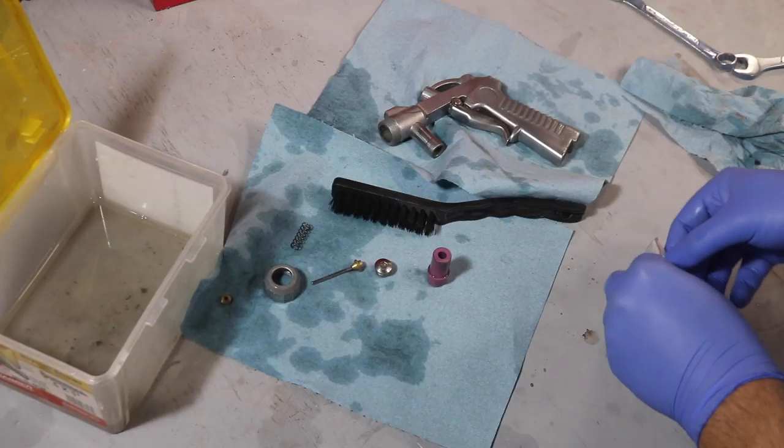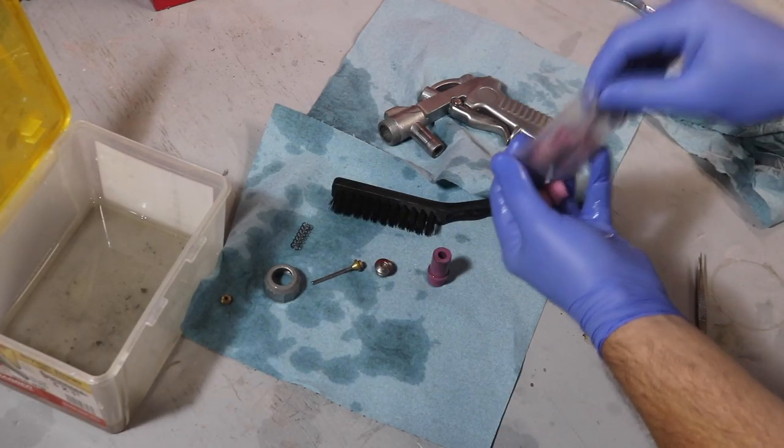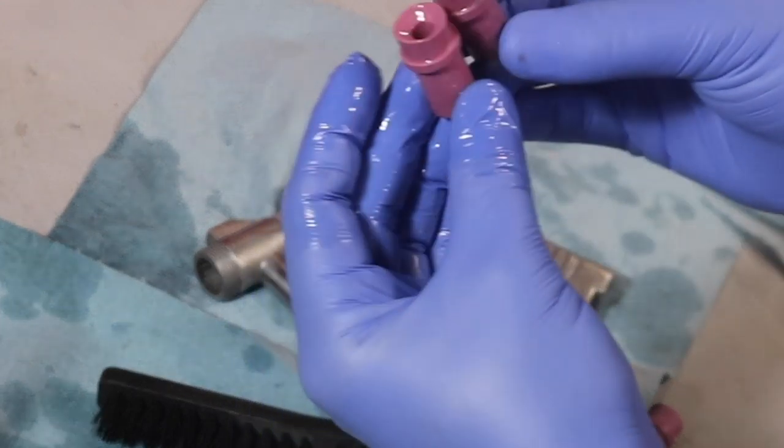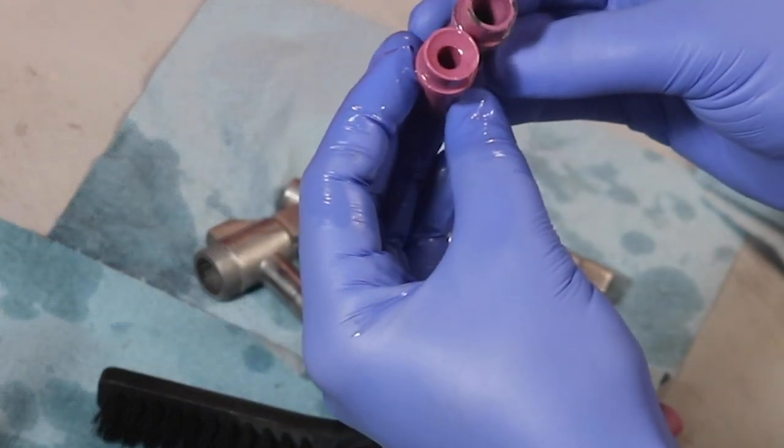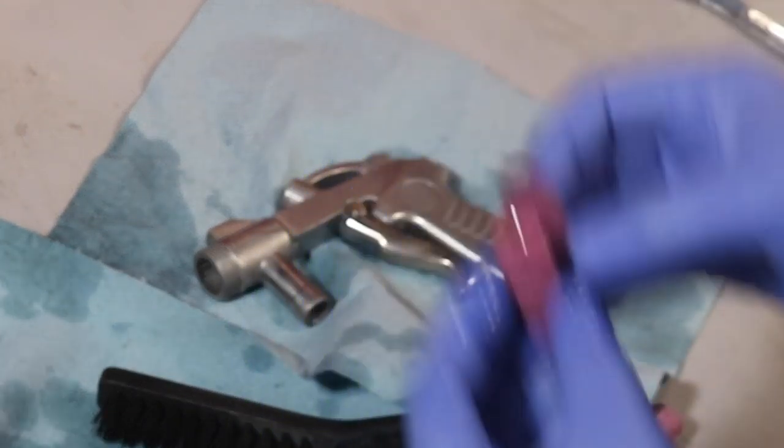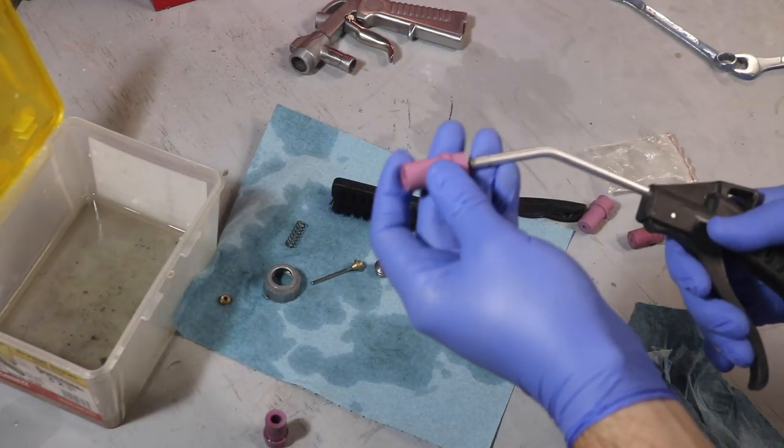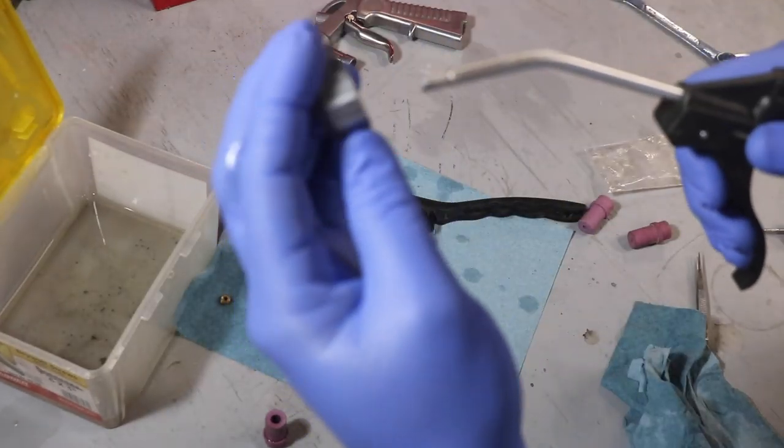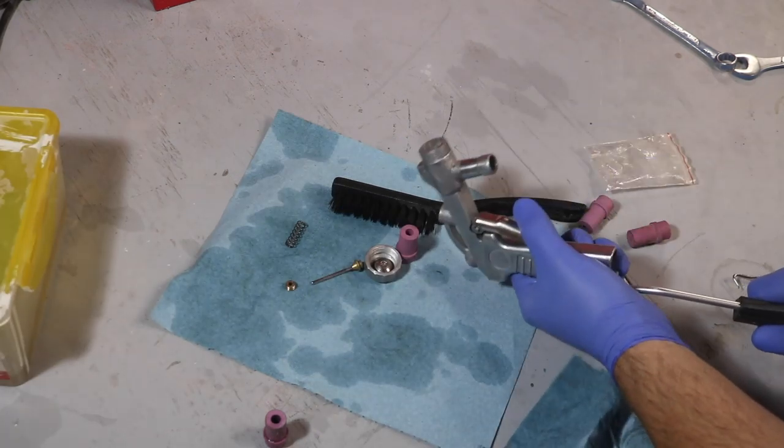At first, I didn't think that the nozzle was that well worn until I had compared it with some of the new nozzles, these also came with the machine when I bought it. Haven't used them since. So I decided to use the nozzle that looked exactly like the one that was already in there as far as diameter. It had a lot more meat on it.